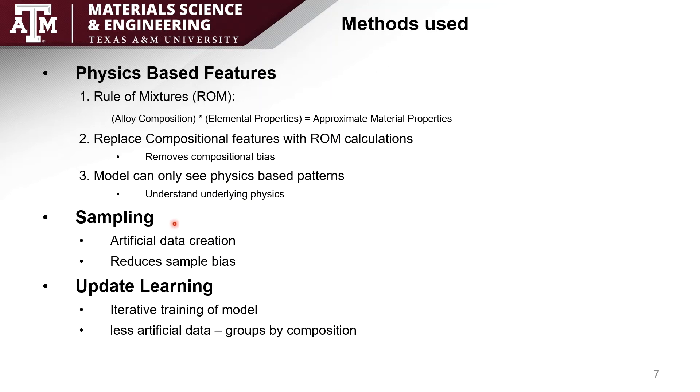Next is sampling. This is a method to correct for misrepresentation of data. One primary method to do this is using artificial data creation which I'll talk about in this next example.